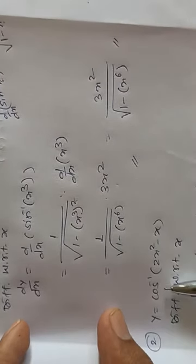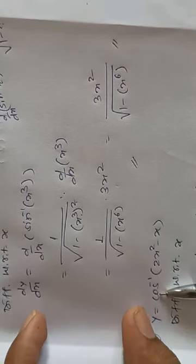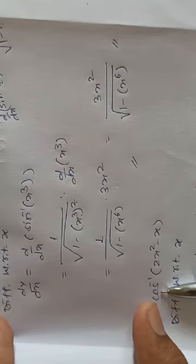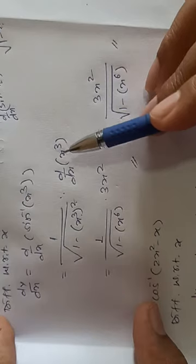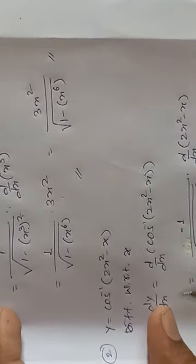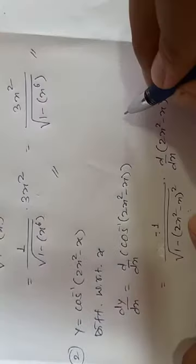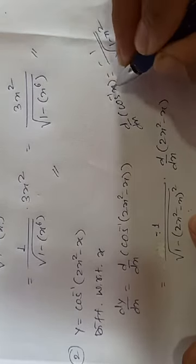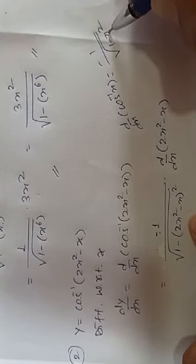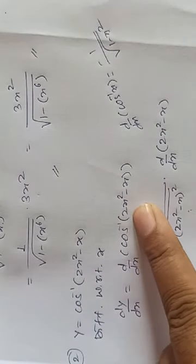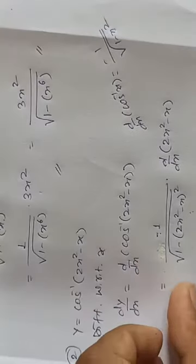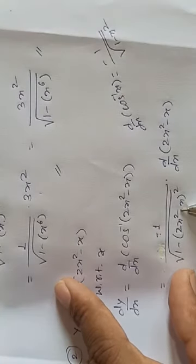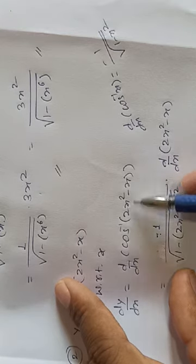Next example is cos inverse of 2x square minus x. Now here, at the start, what is there? Cos inverse. So for its derivative, cos inverse derivative is - both sin and cos inverse are the same, only minus sign remains. Look, I've written all the steps here. The derivative is minus 1 upon square root of 1 minus, and where x is there, the whole part 2x square minus x comes.